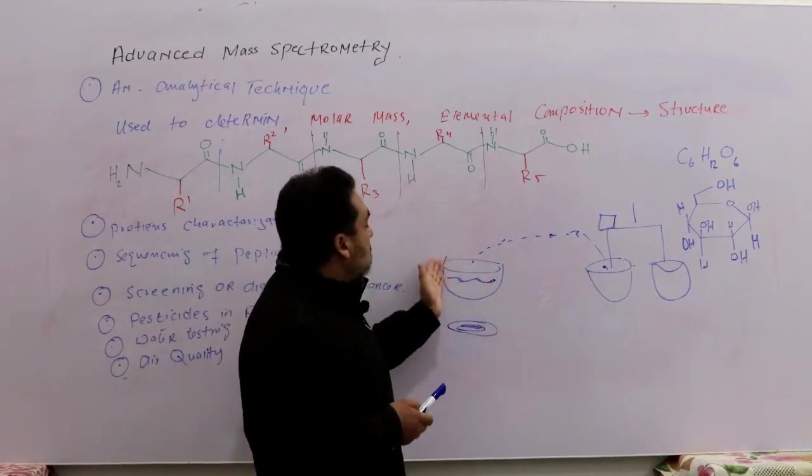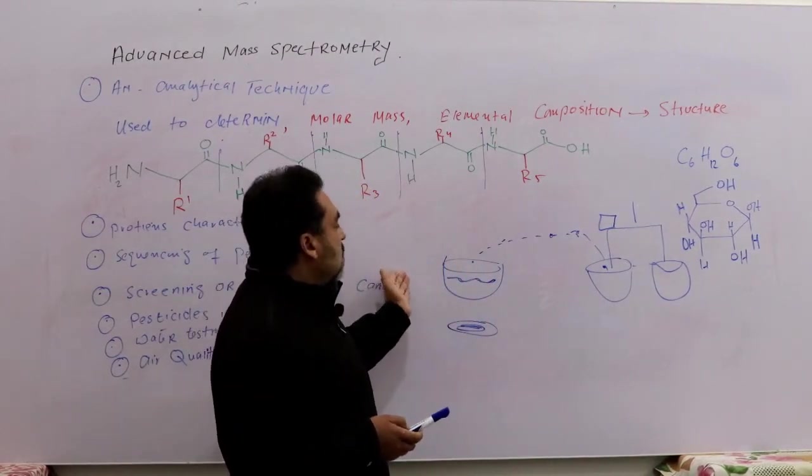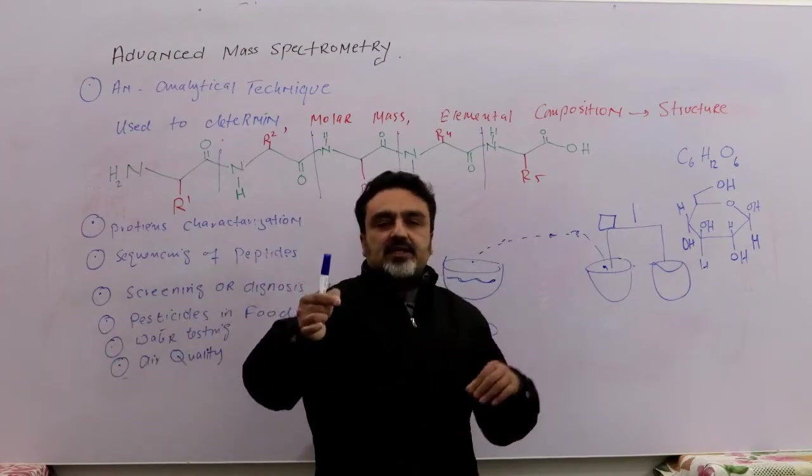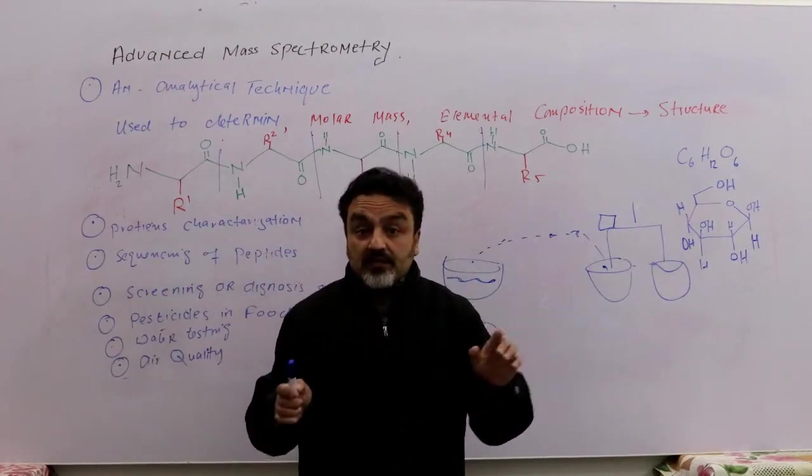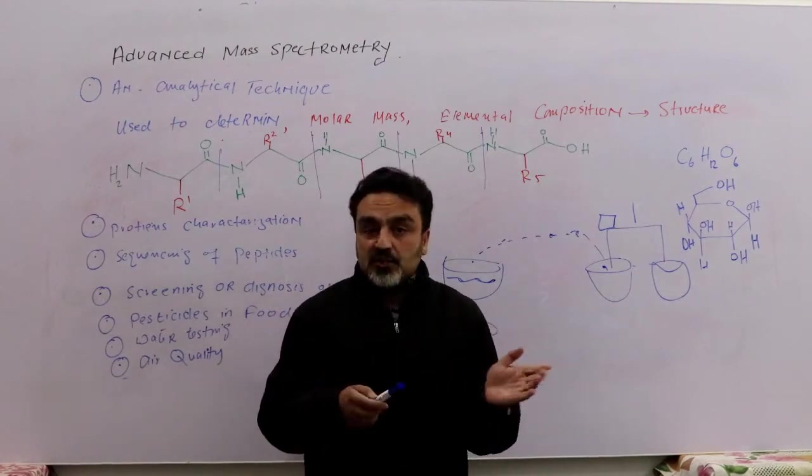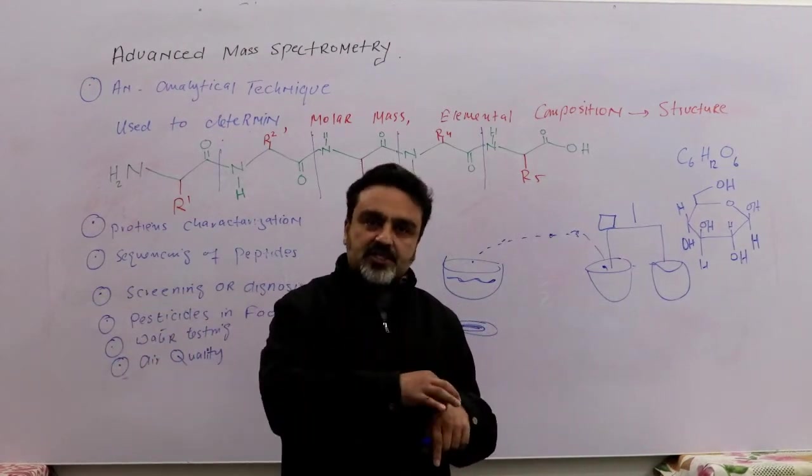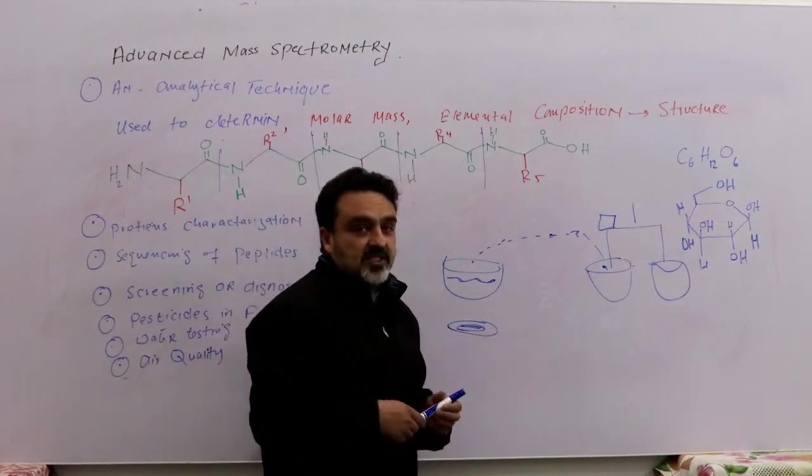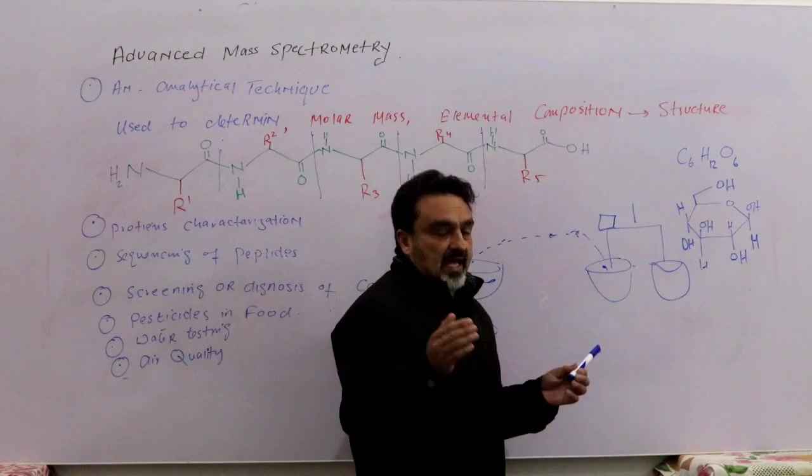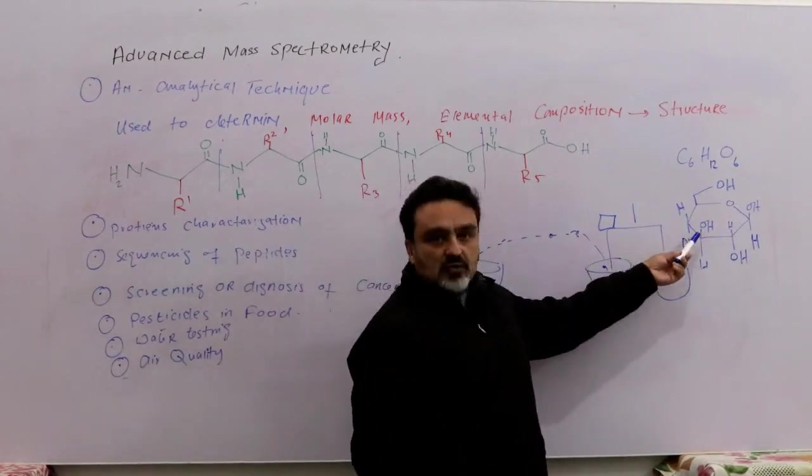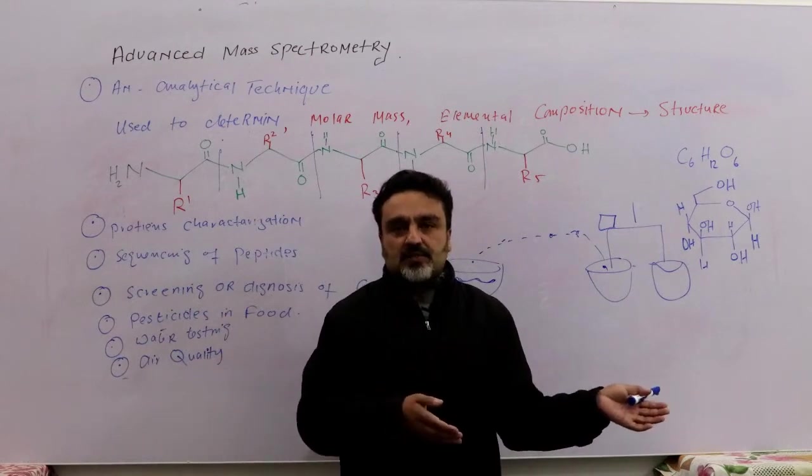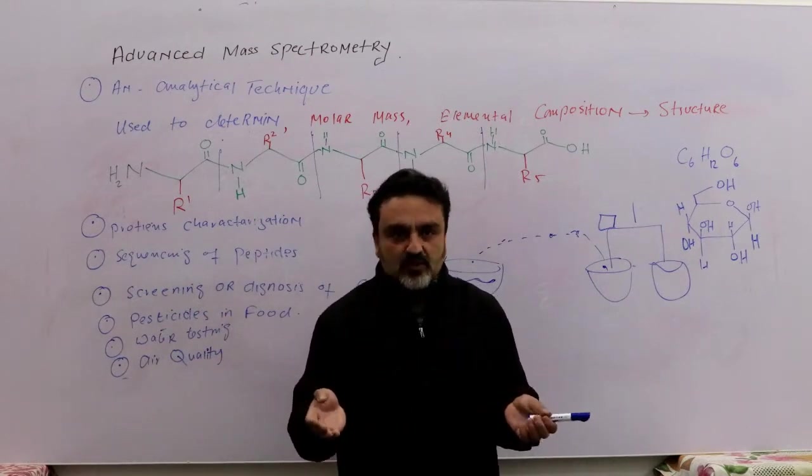It can also tell you the elemental composition, what types of elements are present in that molecule. Again, a magic. Because suppose somehow someone manages to isolate a single molecule. If he or she doesn't know what this is and places it on some digital balance, it tells you the weight. But mass spectrometry can also tell you, like for example, if you have a glucose molecule, someone gives you a powder and you don't know what these molecules are.